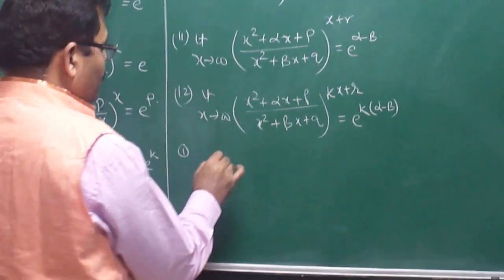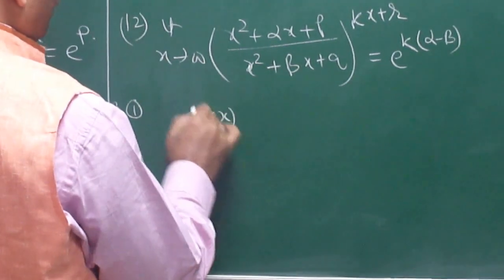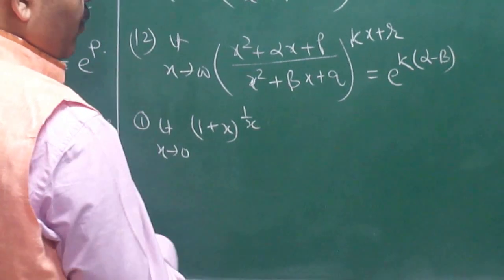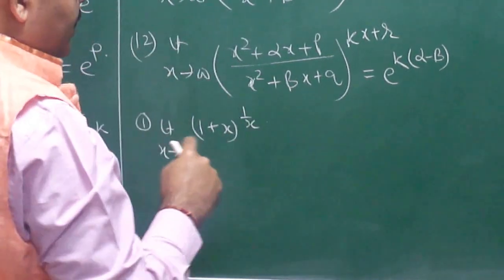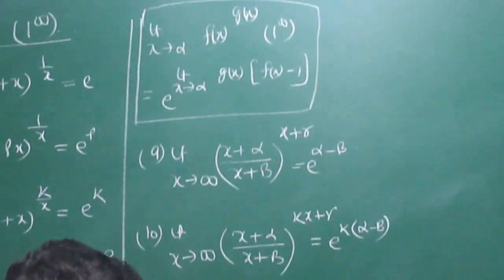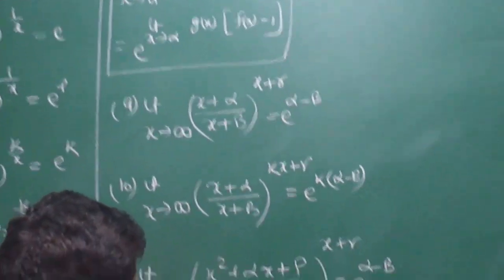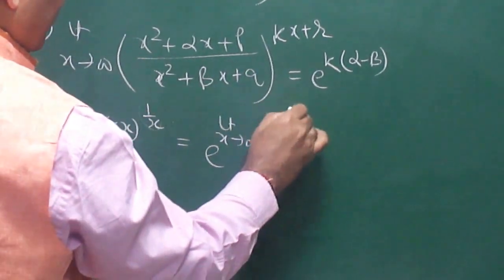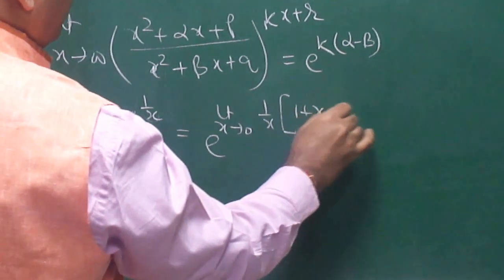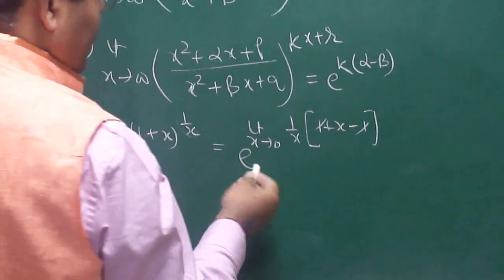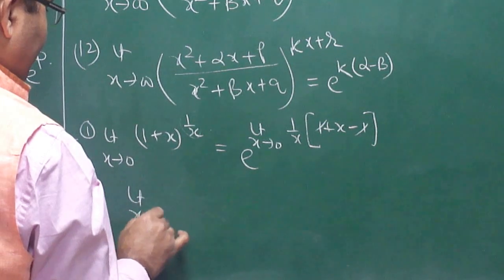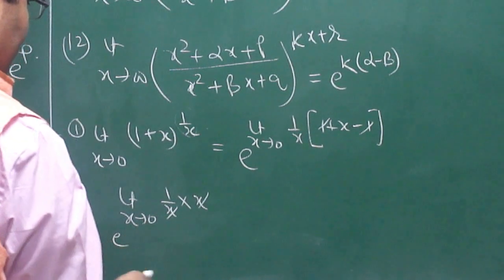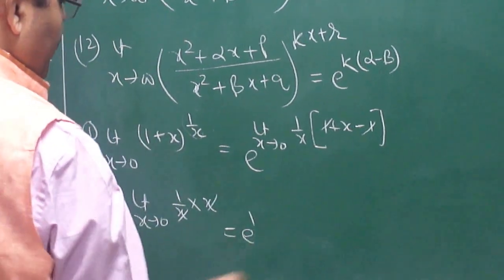Let us prove the first one: limit x tends to 0, 1 plus x to the power 1 by x equals e. Using our pattern, this equals e to the power limit x tends to 0, g(x) into f(x) minus 1 — that is 1/x into (1 plus x minus 1). The 1s cancel, leaving limit x tends to 0, 1/x into x. The x's cancel, giving e to the power 1, that is e.